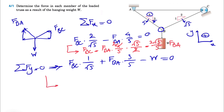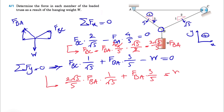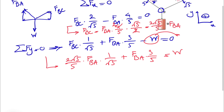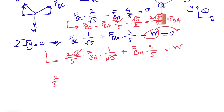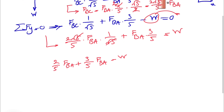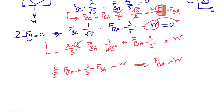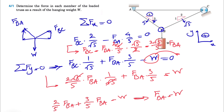Plugging that into the ΣFy equation, instead of FBC we substitute (2√5/5) · FBA times (1/√5), plus FBA times (3/5) equals W. The √5 terms cancel, giving us (2/5)FBA + (3/5)FBA = W, which is (5/5)FBA = W. Therefore FBA = W. Since there is no negative sign, the assumed direction was correct, meaning the member is in tension.